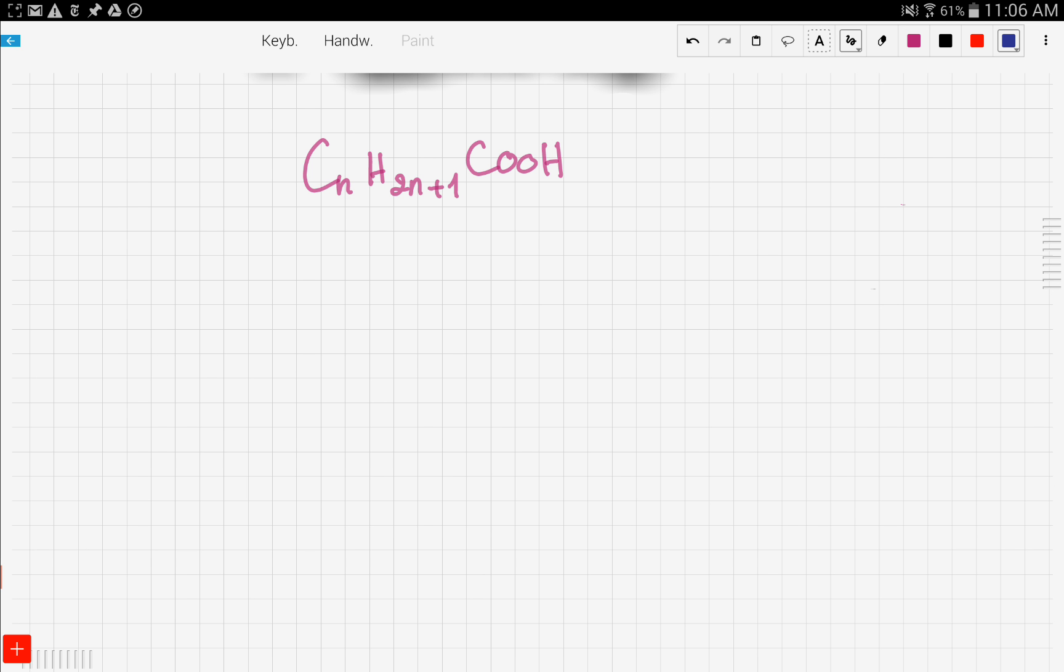The functional group for carboxylic acids is COOH, or we're going to nickname it as COO. This COO is the functional group and we name it as the carboxyl group.